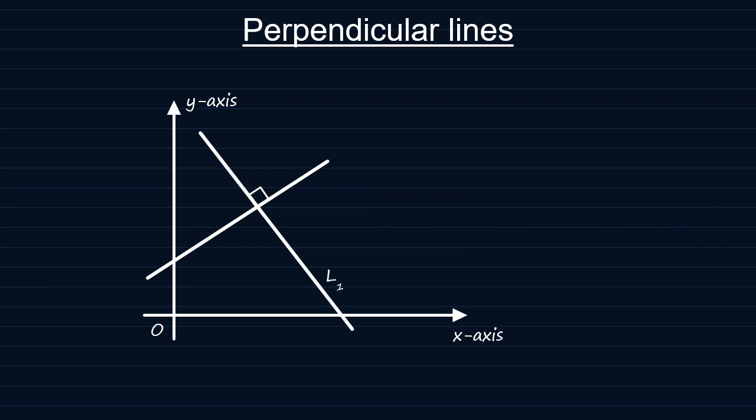So, if this line L1 has a gradient M1 and this other line, which I want to call L2, has a gradient of M2, then the product of the gradient of L1 and that of L2, that is M1 times M2, will always give us minus 1.